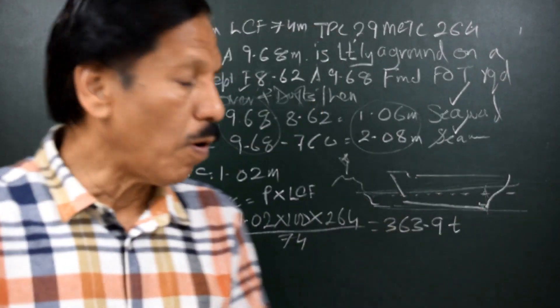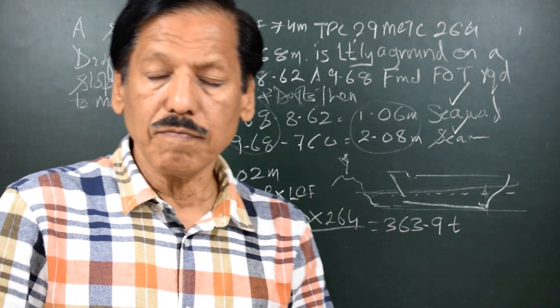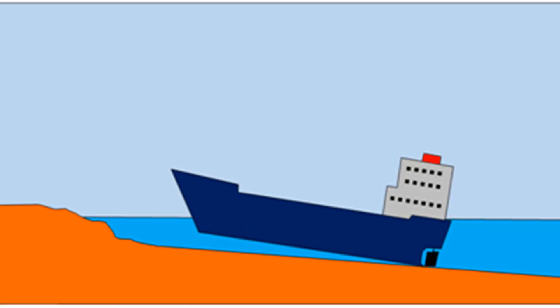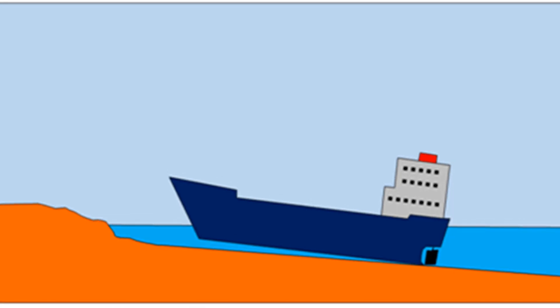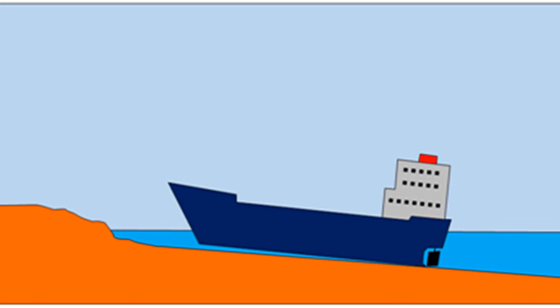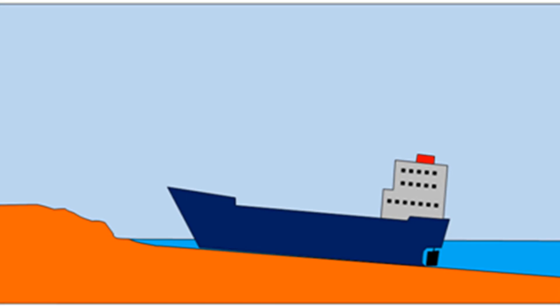One is, there is bodily rise, which is uniform over forward and aft the entire length of the vessel. And the second thing is the trim change. And trim change we know is 1.02 meters.